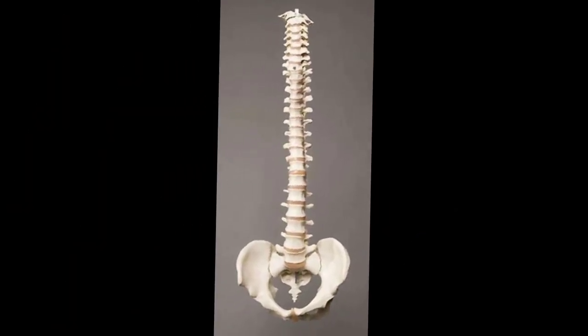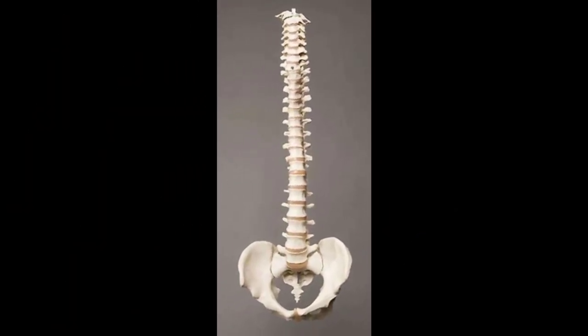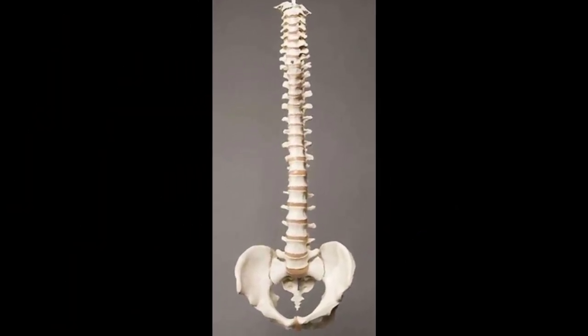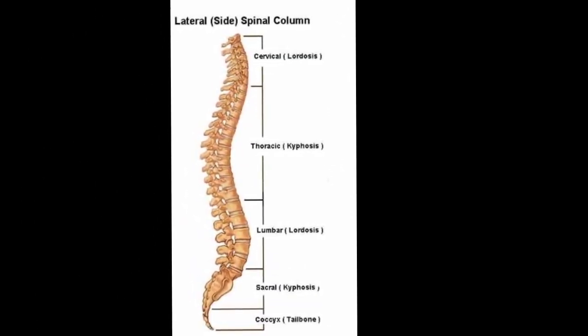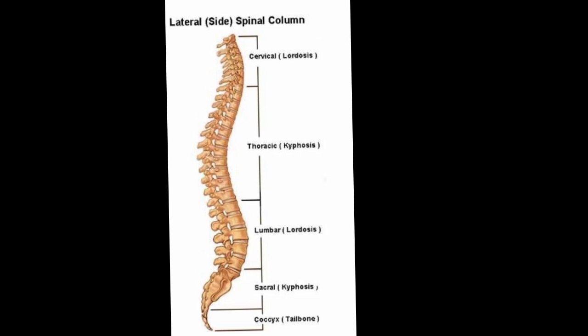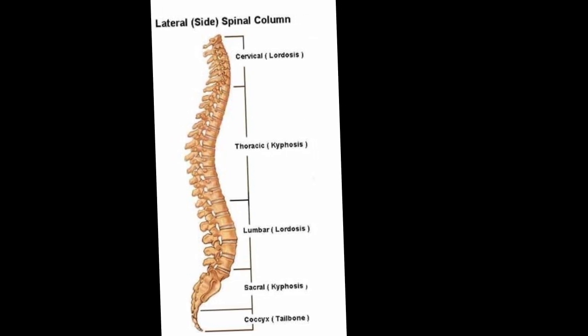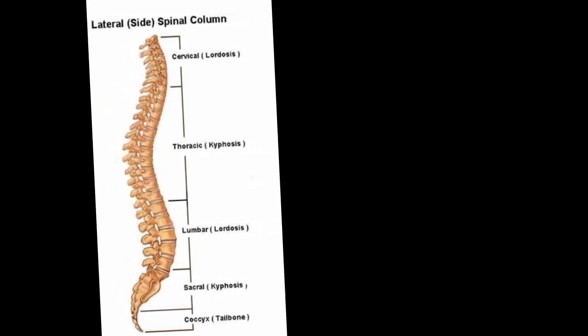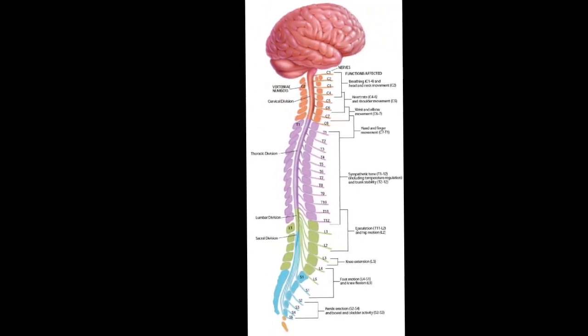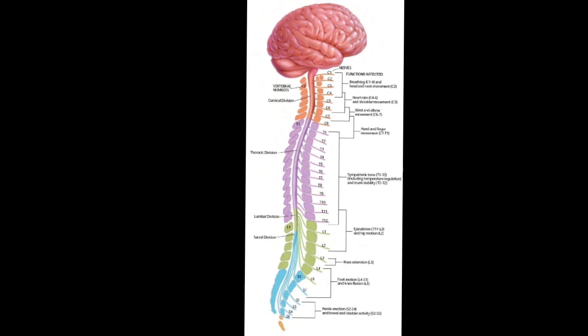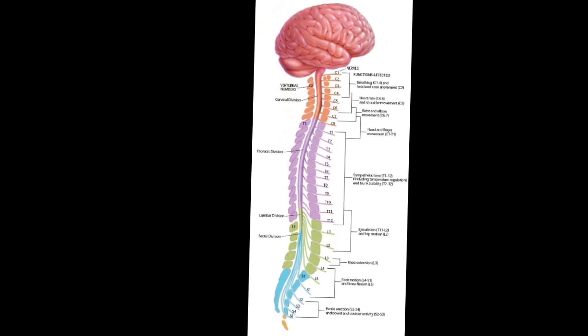The spinal column, which surrounds and protects the spinal cord, is made up of 33 vertebrae. These vertebrae are: cervical 7, thoracic 12, lumbar 5, and sacrum 5. We have 31 pairs of nerves from the spinal cord to muscles and other parts of the body.